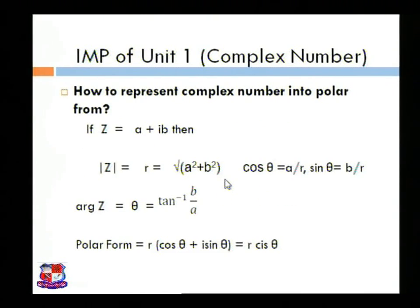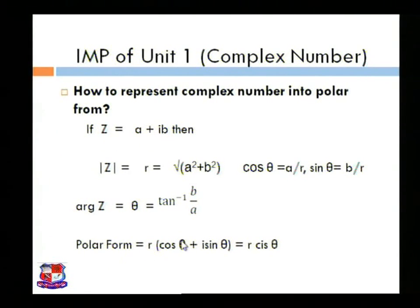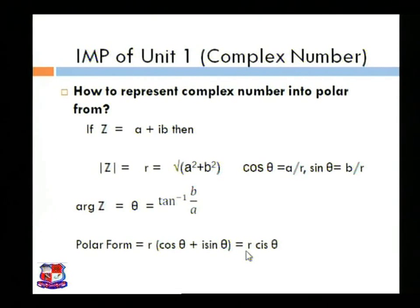We also discussed how to write the polar form of a complex number. If z is equal to a plus ib, then the polar form is r cos theta plus i sin theta, which we can also write in short form as r cis theta.